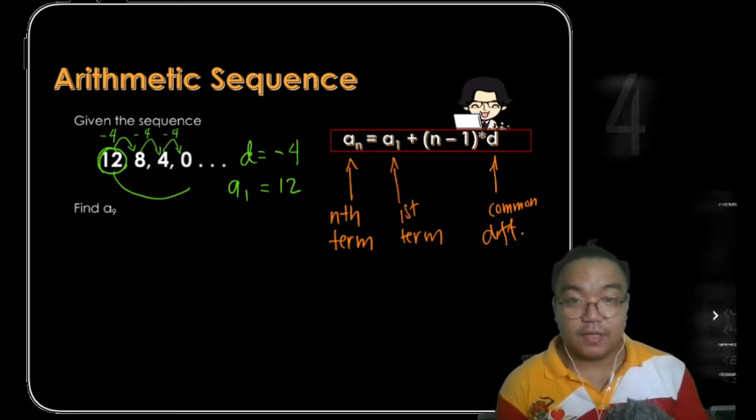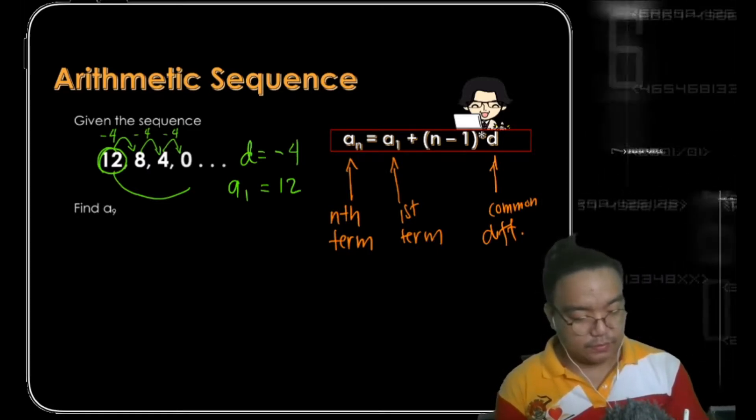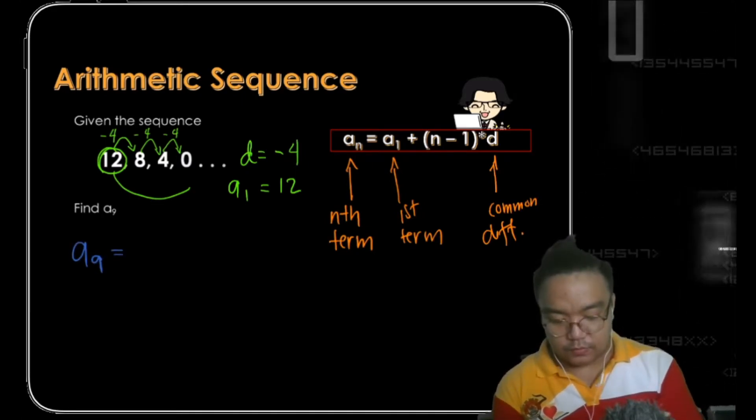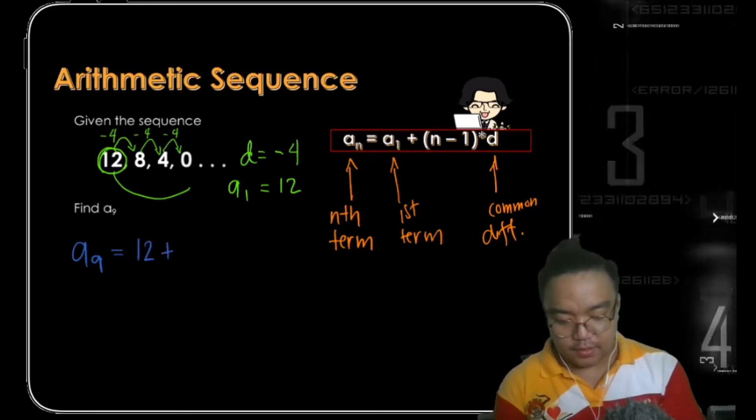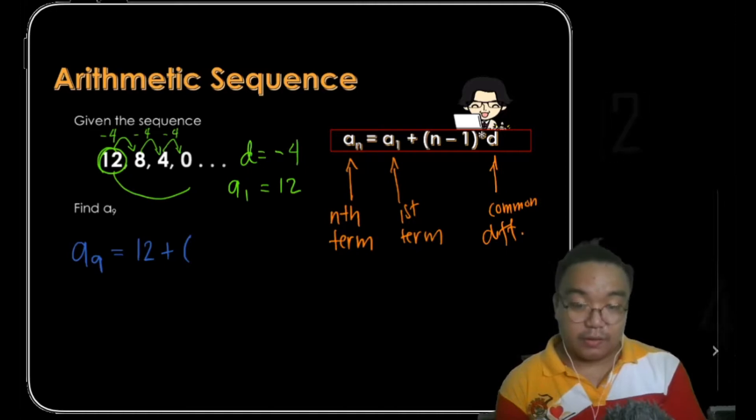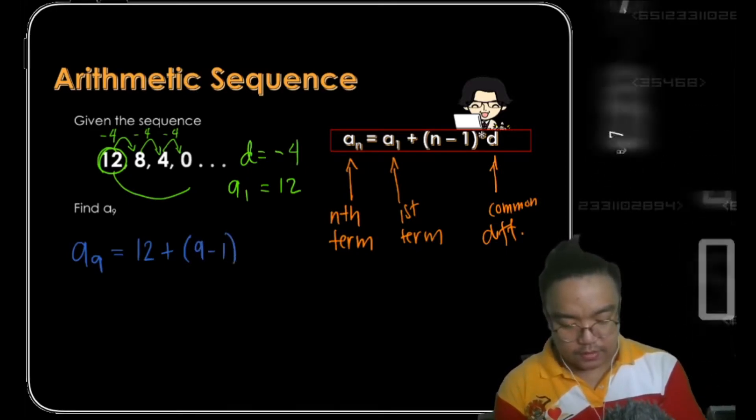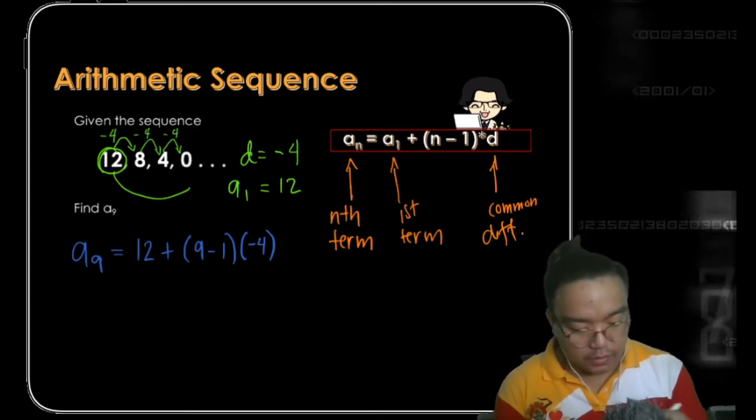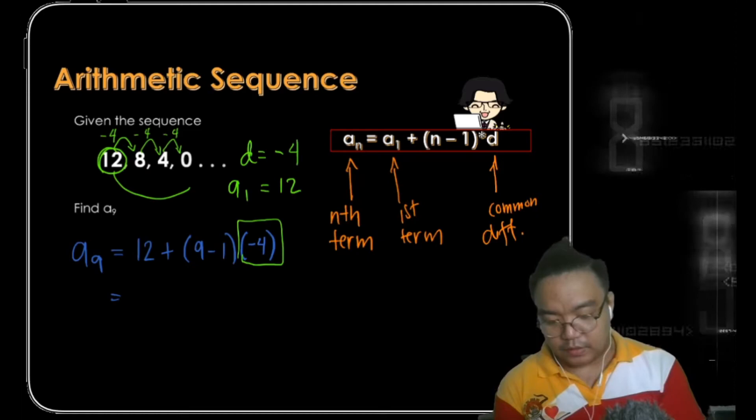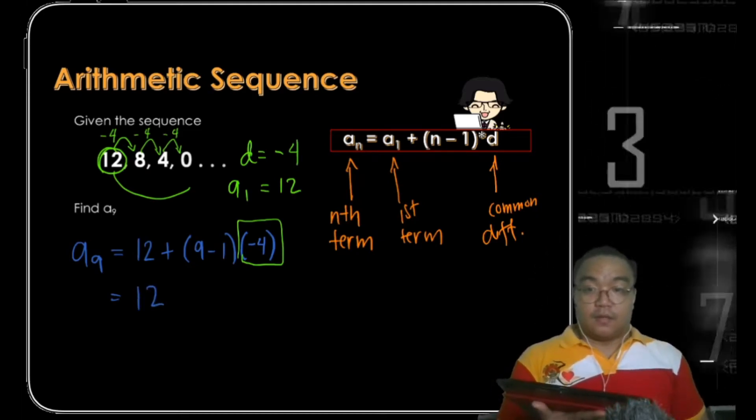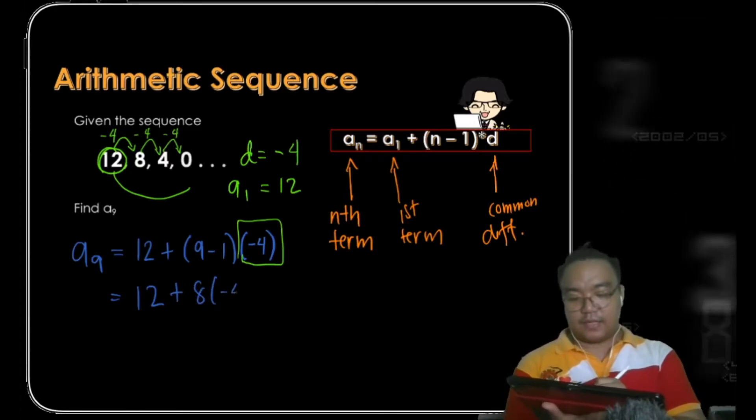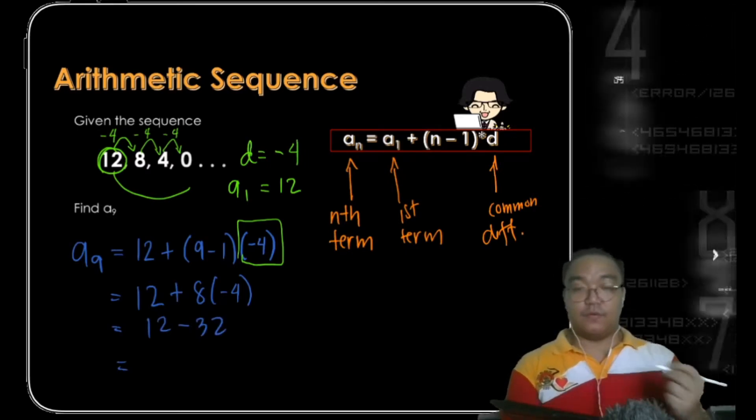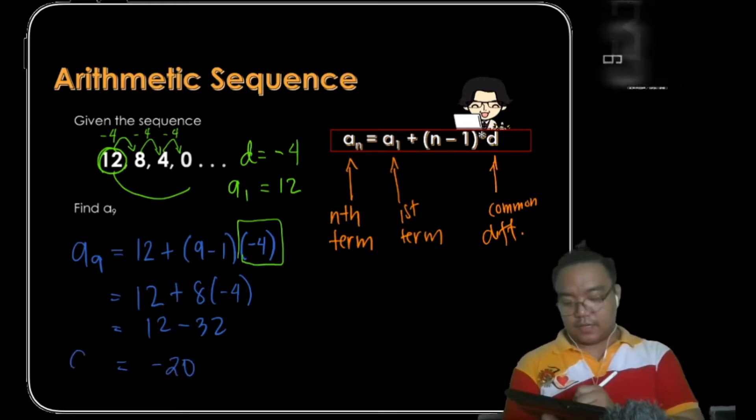Let's plug all the values and solve for the ninth term. For example, you're looking for a sub 9, which equals a sub 1, which is 12, plus n, you're looking for the ninth term so our n is 9, so that's 9 minus 1 times the common difference of negative 4. As I said from the past video, you have to be very careful using this parenthesis. Continuing, 12 plus 9 minus 1 is 8 times negative 4, which gives you negative 32 plus 12 will give us negative 20. So our ninth term is negative 20.